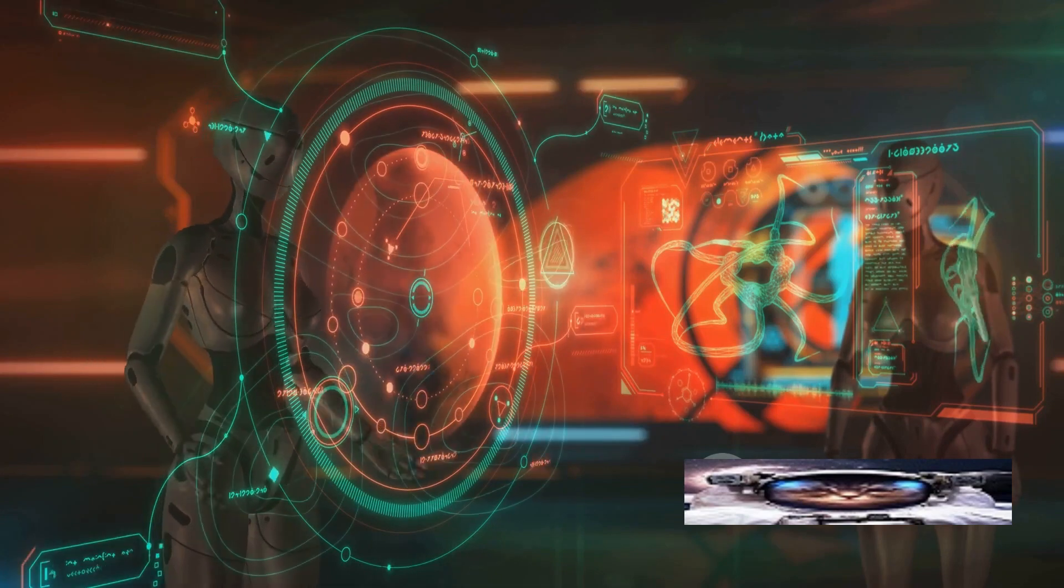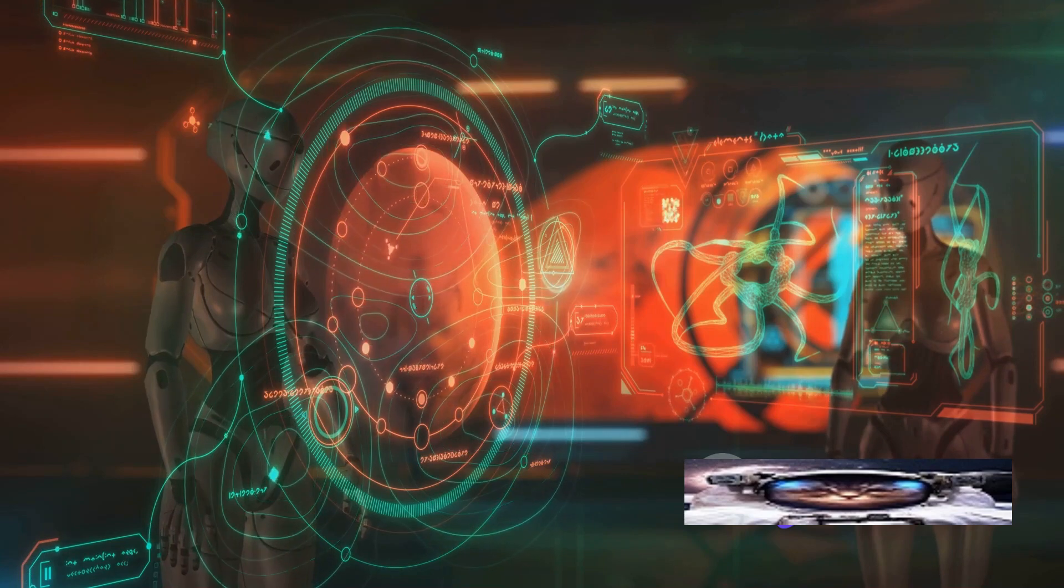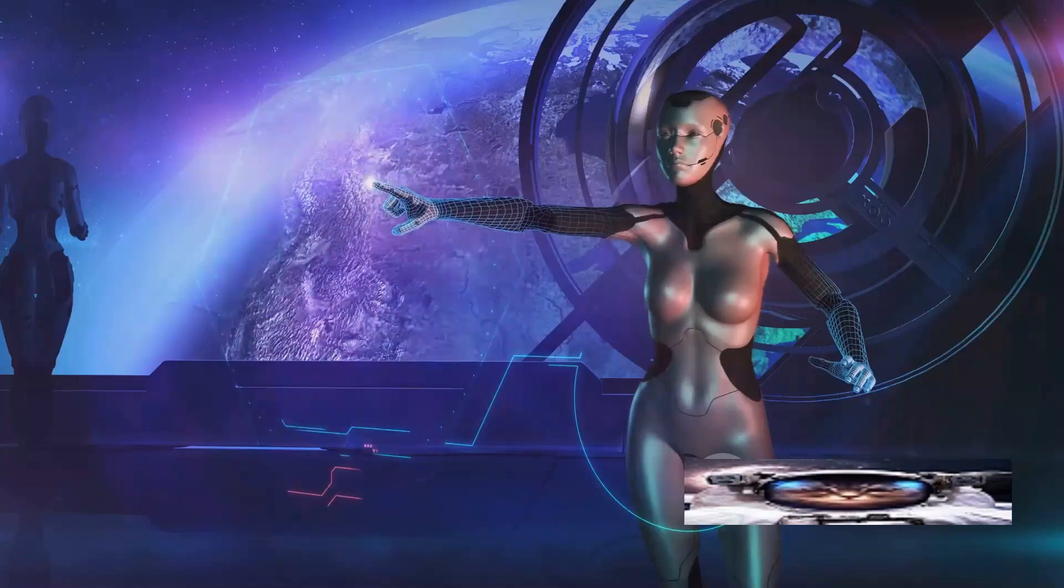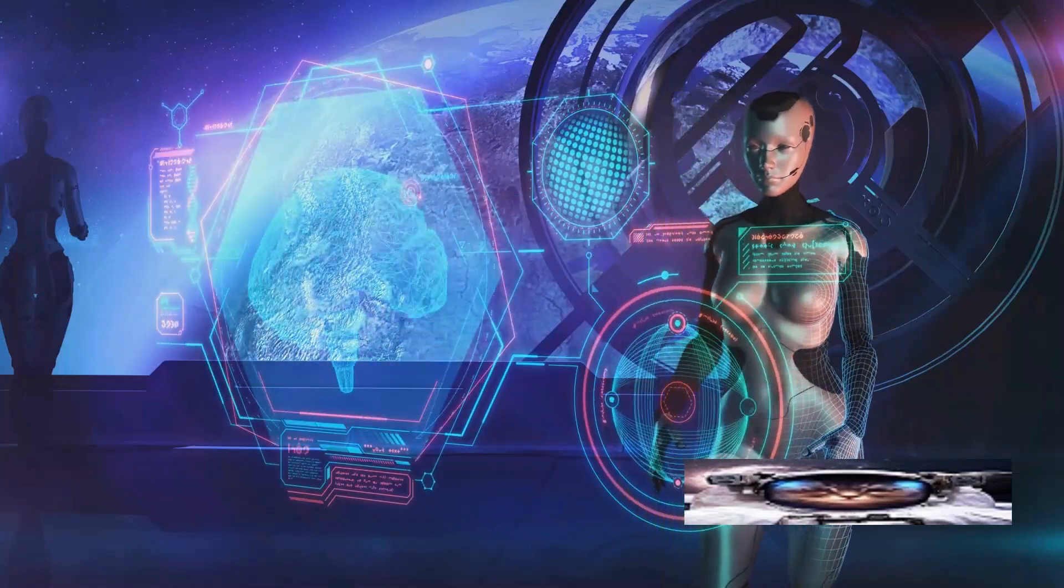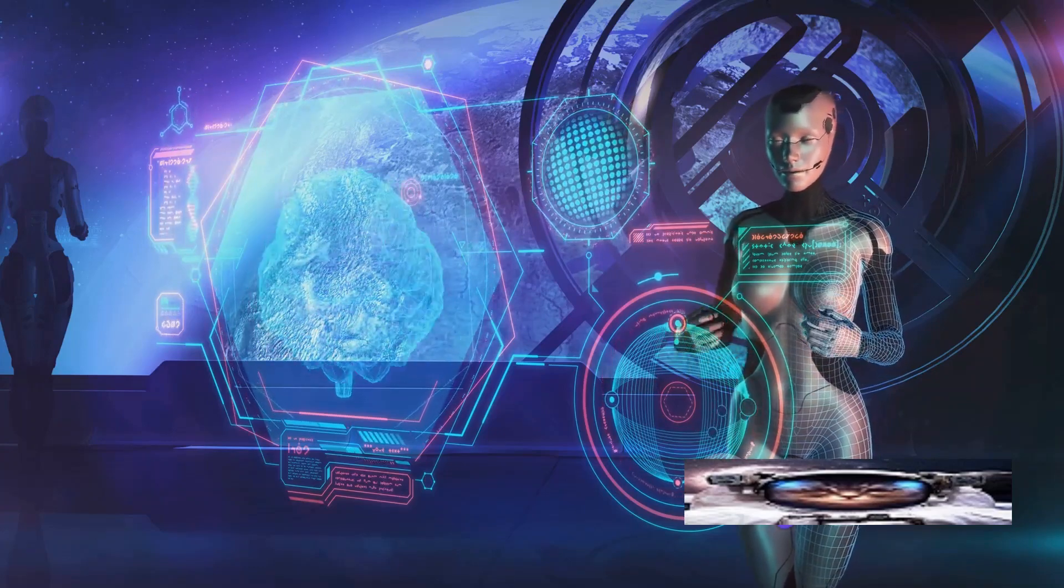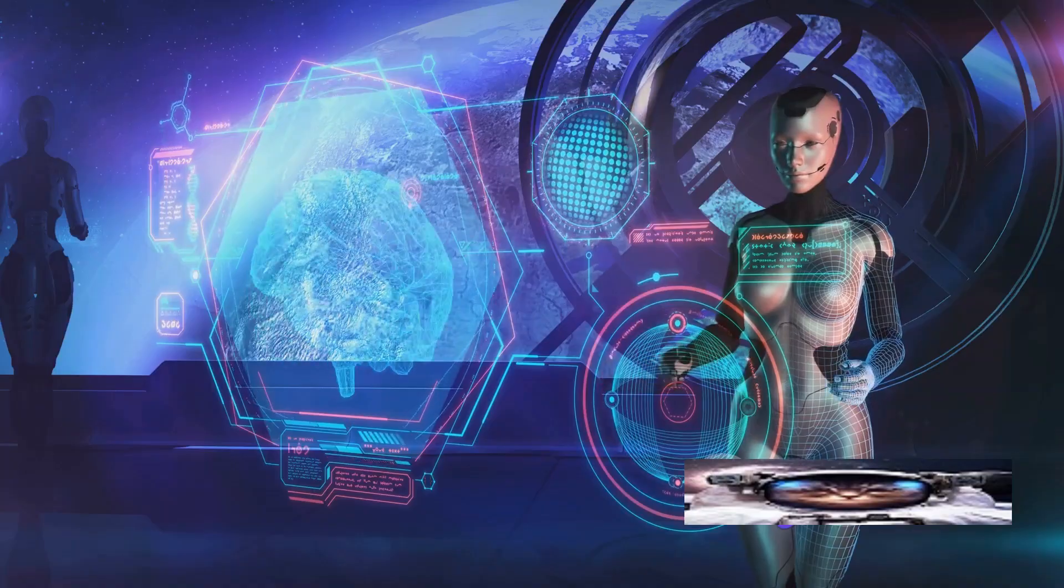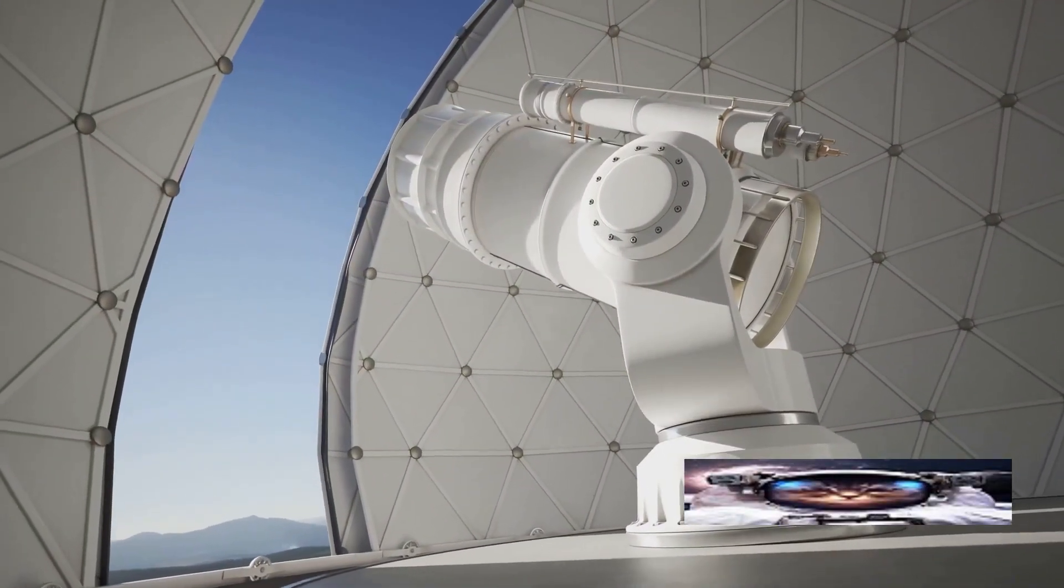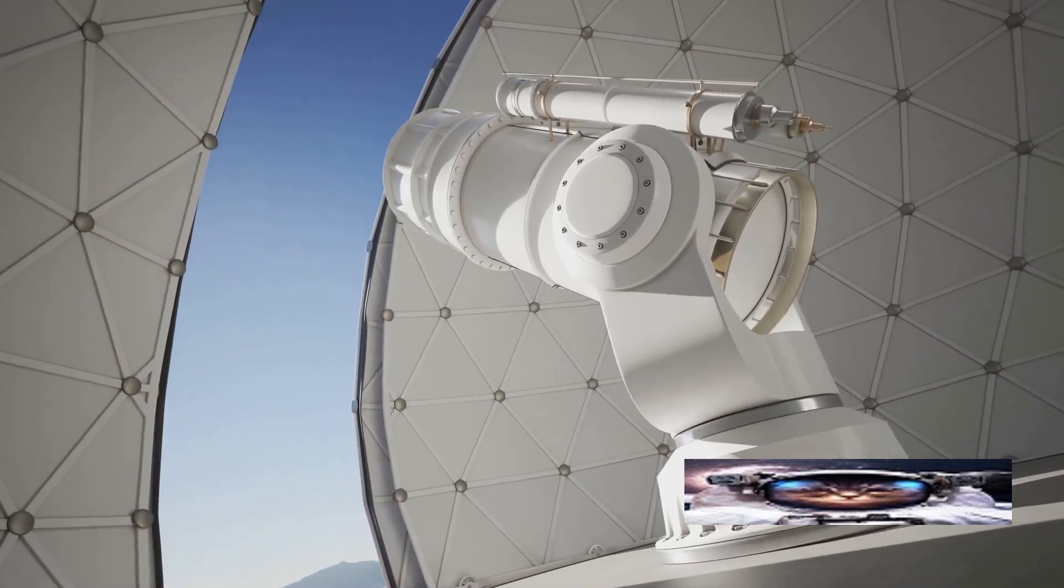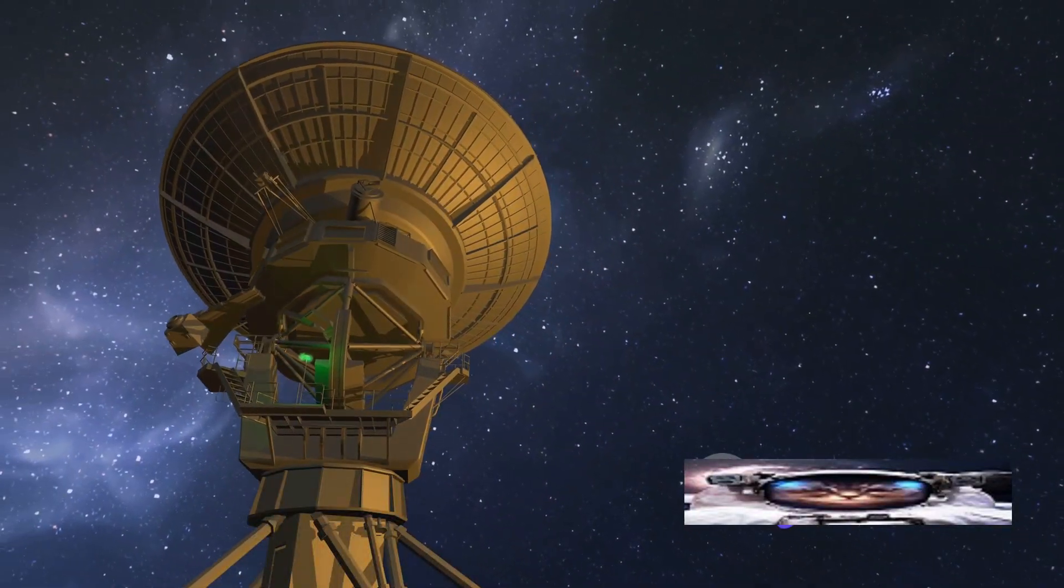In this era of rapid technological advancements, the role of artificial intelligence and machine learning can't be overstated. These technologies could potentially revolutionize the way we search for extraterrestrial life. For instance, they could help us analyze vast amounts of data from space telescopes, identifying patterns and signals that might indicate the presence of life. The future also holds the promise of advanced space telescopes, more powerful and precise than ever before. These marvels of technology will peer deeper into the universe, looking for signs of life in distant exoplanets.